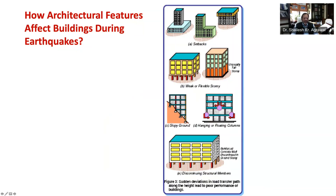Figure 3c shows a building on sloped ground having unequal height of columns along the slope, which also causes ill effects like twisting and damage in shorter columns. Buildings with columns that hang or float on beams at an intermediate story and do not go all the way to the foundation — also known as floating or hanging columns — have discontinuity in the load path, as shown in Figure 3d. Sometimes buildings have reinforced concrete walls to carry earthquake loads to the foundation, but when these walls do not go all the way to the ground and stop at an upper level, as shown in Figure 3e, they are liable to get severely damaged during earthquakes.